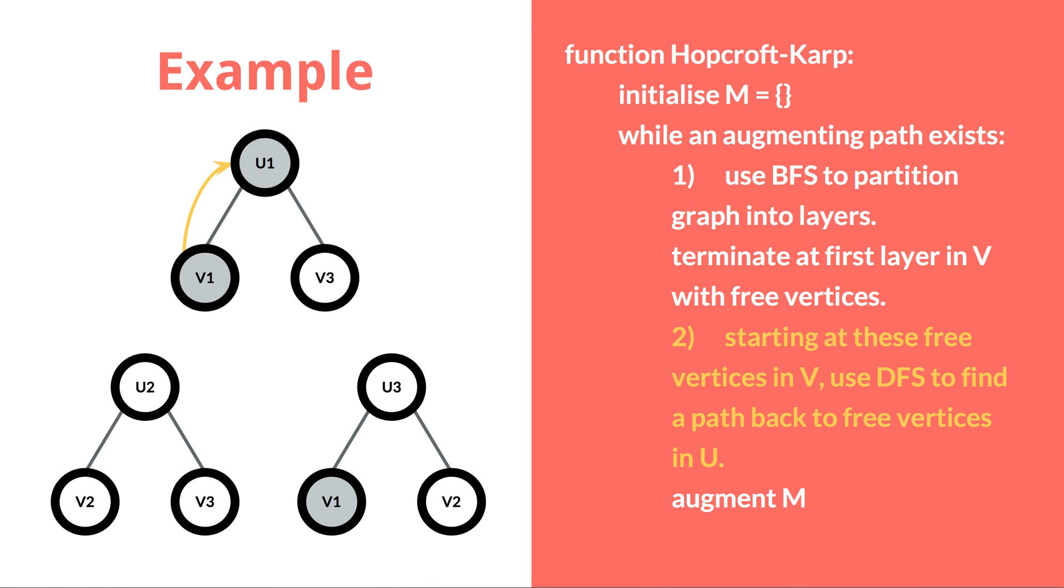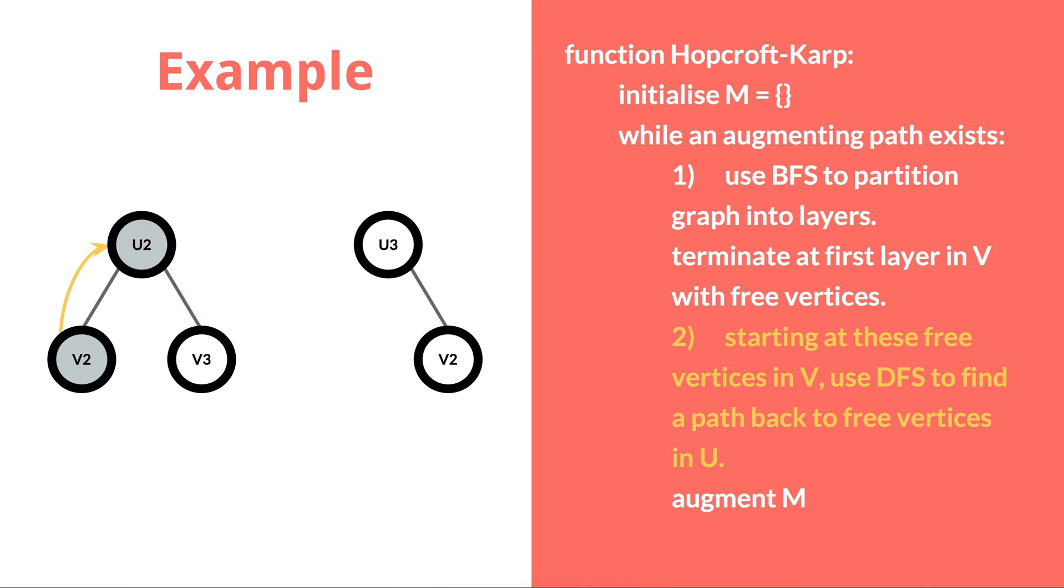A path is found from node V1 up to U1, and this path is removed from the layered trees, orphaning V3, which is then removed. This path is used to augment M.